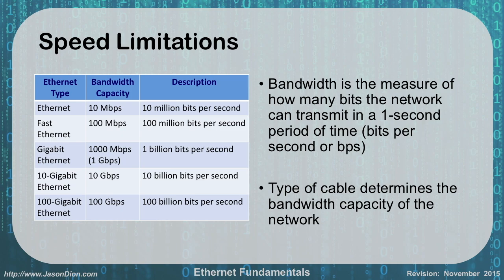Bandwidth is our measure of how many bits a network can transmit in one second. It was initially measured in bits per second, then megabits per second (millions of bits), and now gigabits per second (billions of bits). The type of cable determines your network's capacity. Ethernet at 10 megabits per second uses old Category 3 cabling. Fast Ethernet at 100 megabits per second uses Cat5. Gigabit uses Cat5E and Cat6. 10 Gigabit uses Cat6A and Cat7. 100 Gigabit is not yet available on copper — only on fiber at this point.